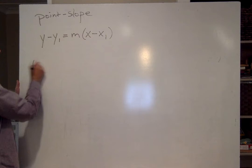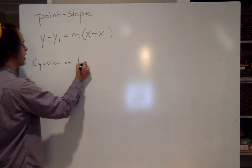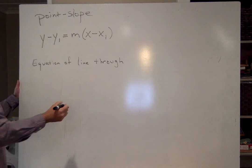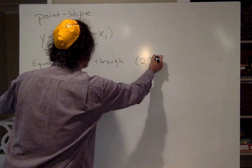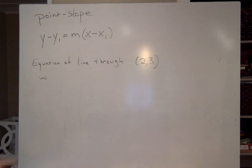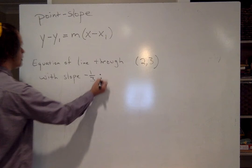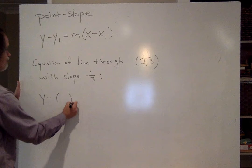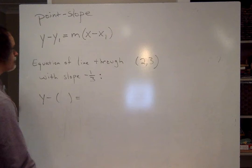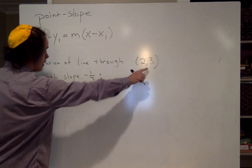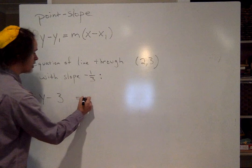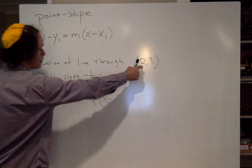So basically this is how you use this one. So let's find the equation of the line through let's say 2 comma 3 with slope I don't know negative one-third. Okay. Here's what it is. Let me just write it out. The y value in my point is 3, m is minus one-third, x minus the x value I'm given is 2, that's it.